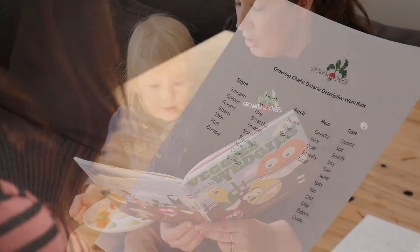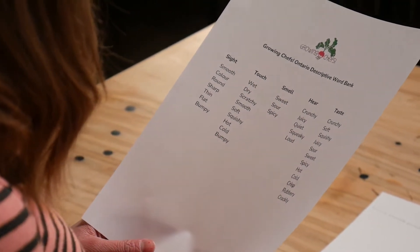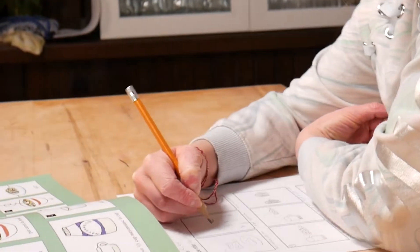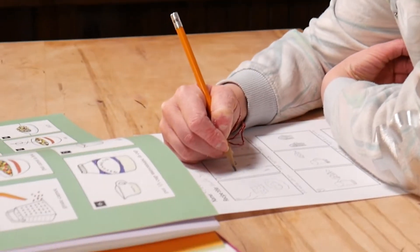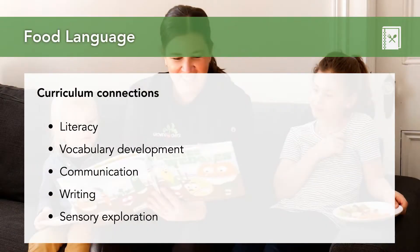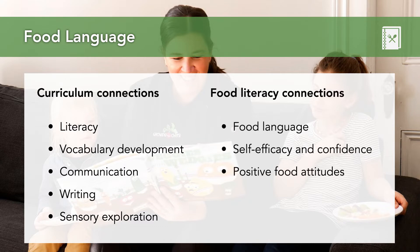The importance of how we use language when discussing food is incredibly important to children. So for this activity we're going to explore language and how we approach new foods. Possible curriculum connections could involve literacy and developing vocabulary, communication, writing, as well as sensory exploration.